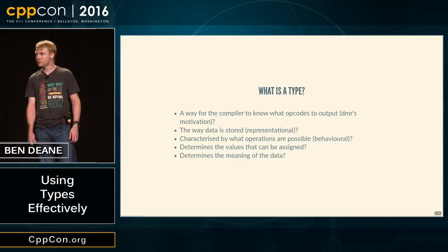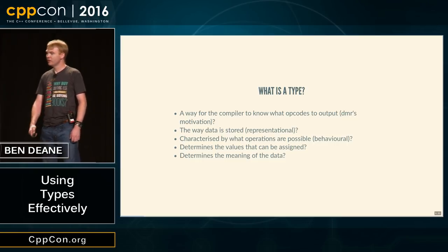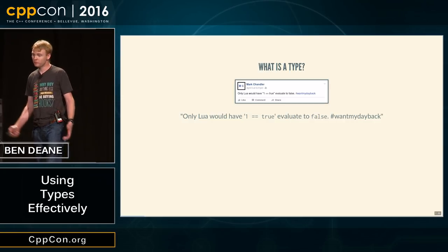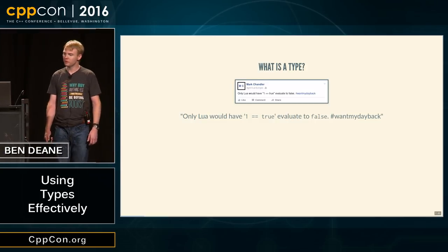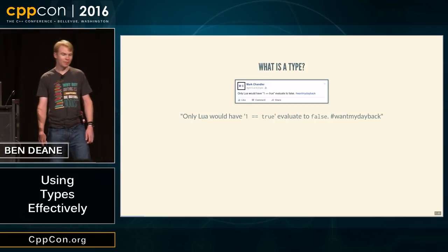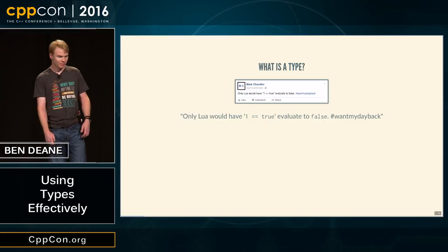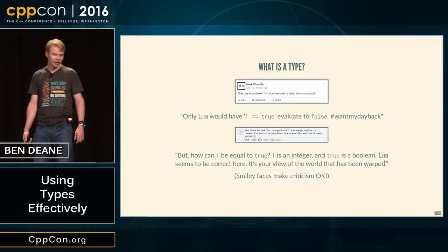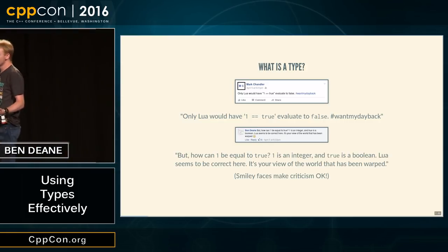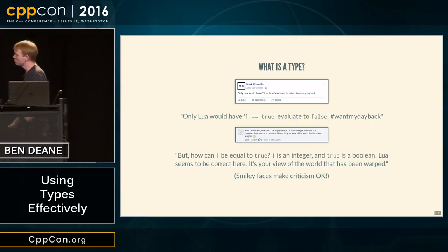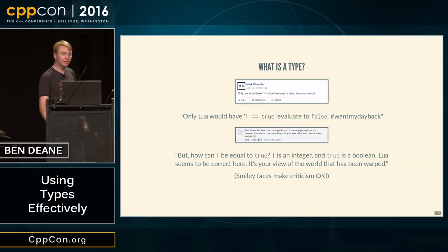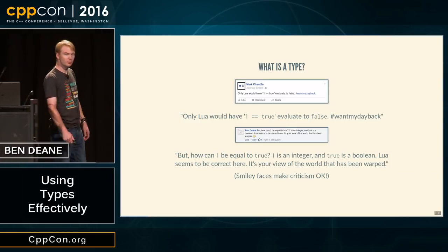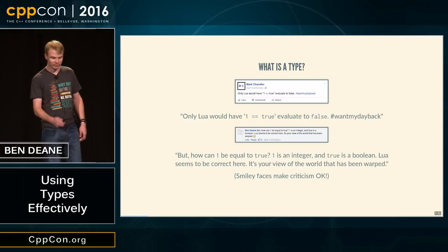Just to note about the representational viewpoint: a friend tweeted — or Facebooked — saying 'only Lua would have 1 == true evaluate to false, hashtag want my day back.' I replied: how can one be equal to true? One is an integer, true is a boolean. They can't be equal. Lua is correct here, and it's your view of the world that's warped. And I put a smiley face, so we're still friends.